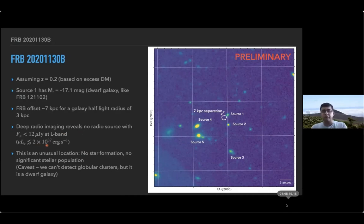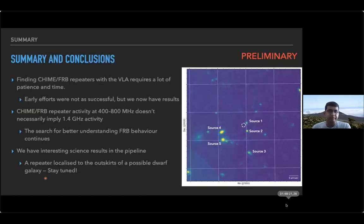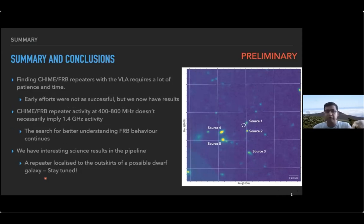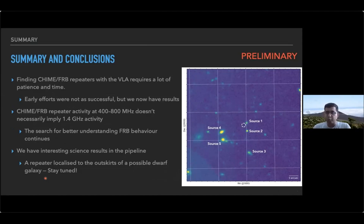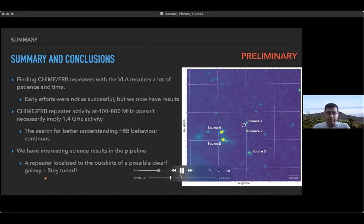The caveat is that if there were globular clusters like the one in M81, we would not see them, but this is a dwarf galaxy, so the probability of having globular clusters is equivalently lower. To summarize, finding CHIME FRB repeaters with the VLA has required a lot of patience and time. Our early efforts were not very successful, but now we have many results. We are trying to better understand FRB behavior so that we can follow up these repeaters more effectively, and we have interesting science results in the pipeline. Stay tuned for upcoming publications.